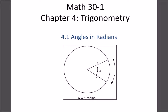We're going to start our trigonometry unit and the first topic we're going to look at is measuring angles, radians, how we calculate them, how we convert them from degrees, and why we use radians. The first thing you want to understand is a radian is just a different way of measuring angles.